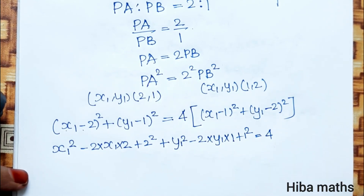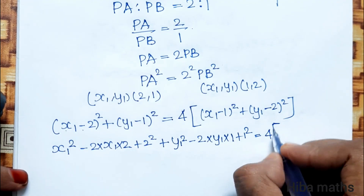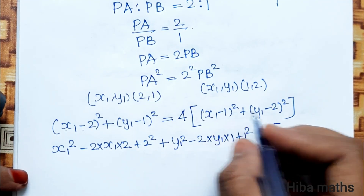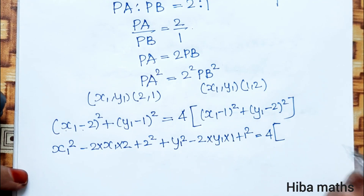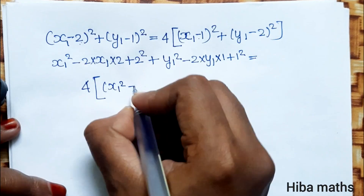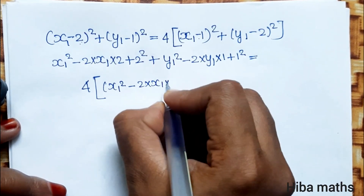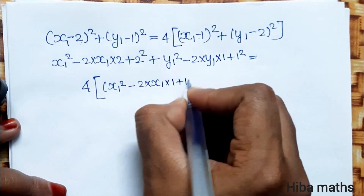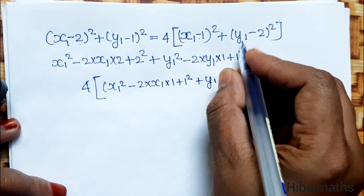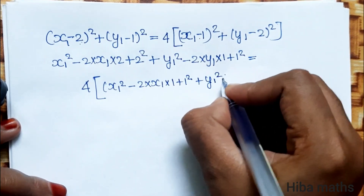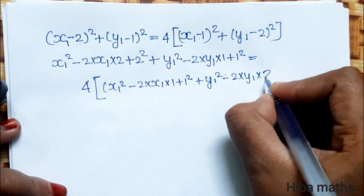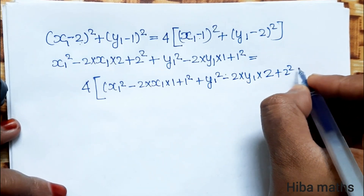That is equal to 4 times: (x1 minus 1) whole square expanded as x1 squared minus 2x1 plus 1, plus (y1 minus 2) whole square expanded as y1 squared minus 4y1 plus 4.